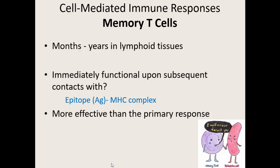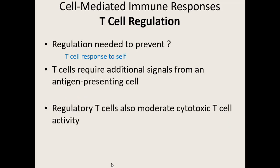For certain intracellular pathogens we become immune because the immune system kills them off before we even know we're infected. However, we need a little regulation with our T cells, mostly because our T cells can get overactive and start responding to our self and auto-antigens on body cells and start killing them. T cells do require an additional signal from an antigen-presenting cell as to whether they should respond or not. Our regulatory T cells really help moderate cytotoxic T cell activity so they don't kill normal body cells.